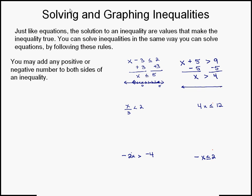Again, I'm going to make my number line and make my markings. This time it's going to be an open circle around 4, and then it's going to be all the values to the right of 4. So that's the graph for that solution to that inequality.